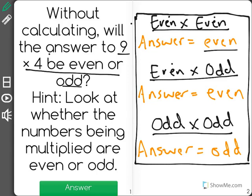If you're multiplying an even number times an odd number, your answer will also be even. The only time you will get a product that is an odd number is if you're multiplying two odd numbers.